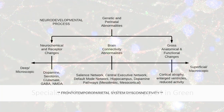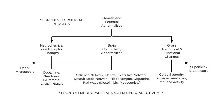To summarize the take-home message of this content, enduring psychotic illness from a neurobiological and genetic perspective is described as a neurodevelopmental process that ultimately results in frontotempoparietal system disconnectivity. This places the individual in a vulnerable position in the face of stressors. As you will see in the third part of this series, the encounter of stressors in the face of this underlying vulnerability ultimately leads to the symptoms of psychosis.